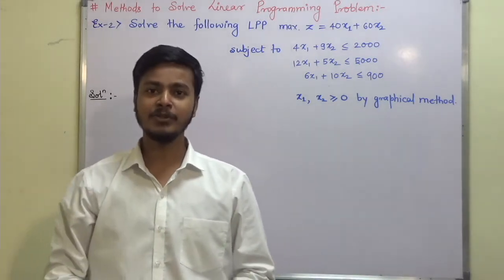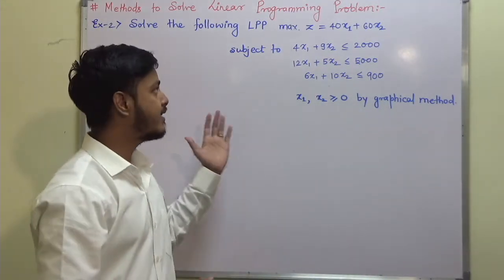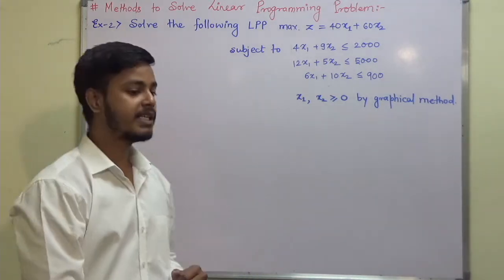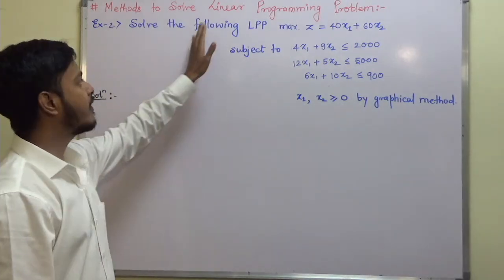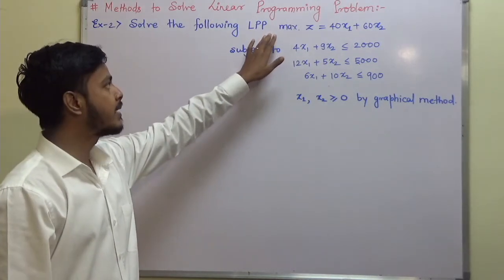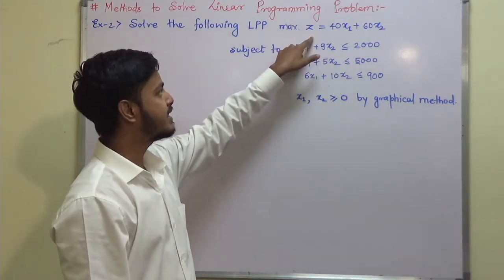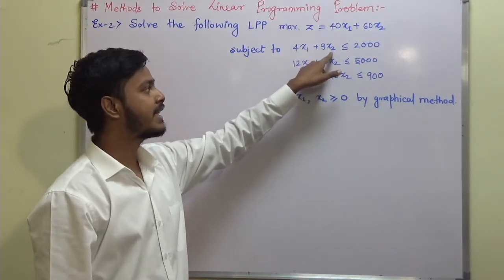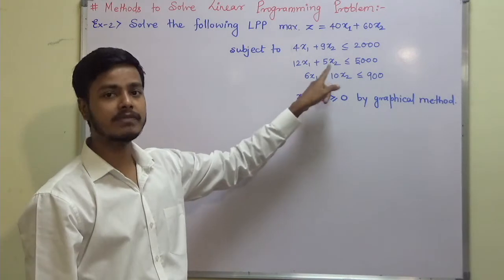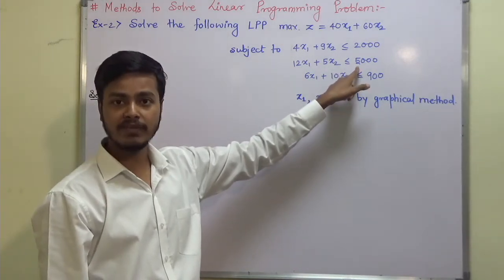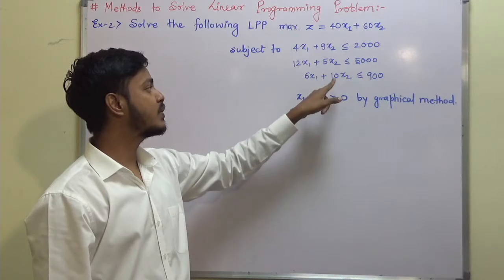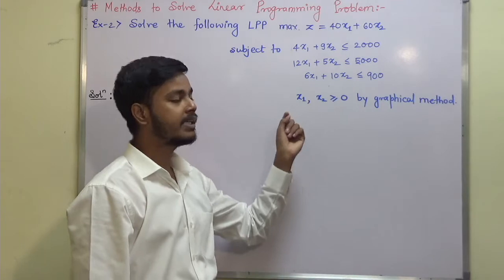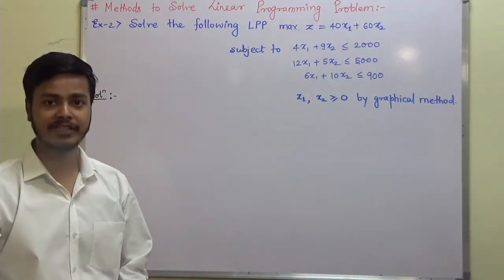Hello and welcome to this learning video. I'm back with the second problem on the graphical method. This problem says: solve the following LPP. Maximize Z = 40x1 + 60x2, subject to 4x1 + 9x2 ≤ 2000, 12x1 + 5x2 ≤ 5000, 6x1 + 10x2 ≤ 900, and x1, x2 ≥ 0. We have to solve this by the graphical method.